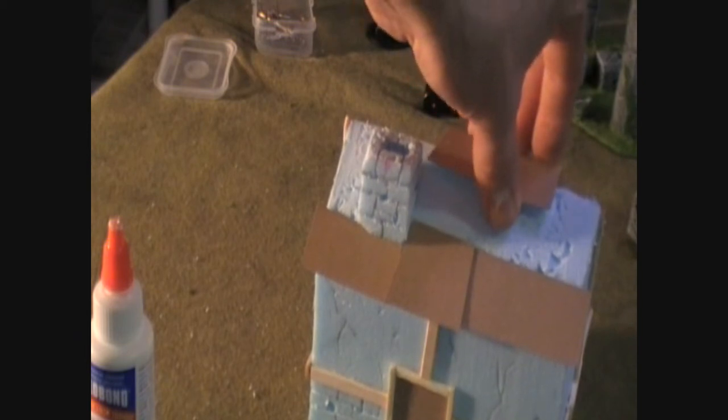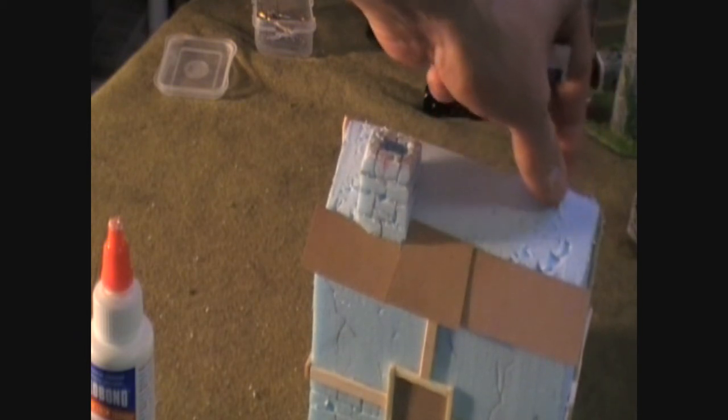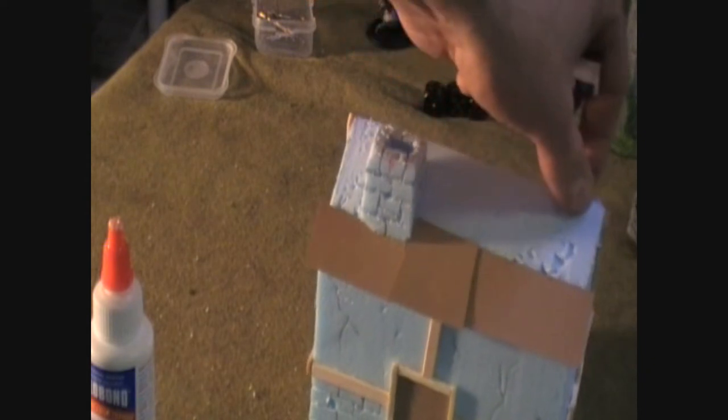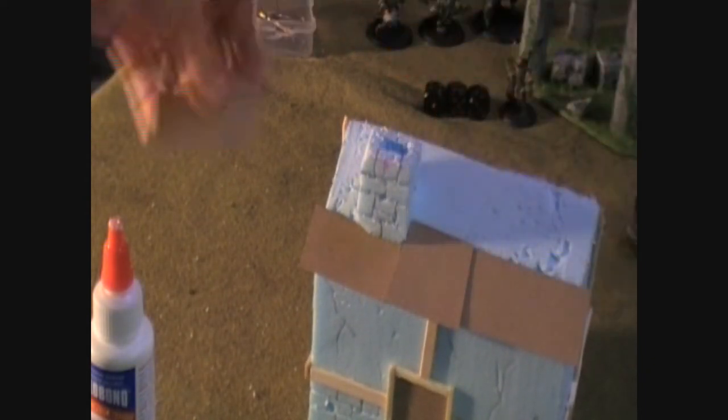But basically you continue to lay shingles over each other in a telescoping fashion all the way up to the roof. And then you crease a piece with an X-Acto knife and have it overlapping a frame over the top.